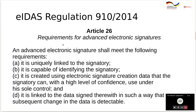Regarding electronic signature, there is not even a single definition of the term. Advanced electronic signature is defined in a specific article. It has several required properties: we must be able to link the electronic signature to the signatory, giving authenticity so we know who made the signature, and we must be capable of identifying the signatory.